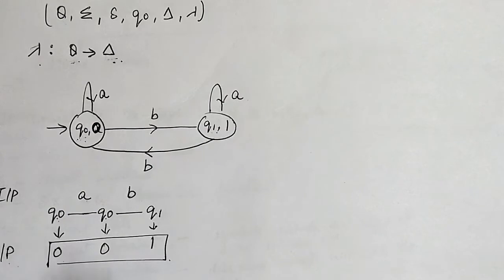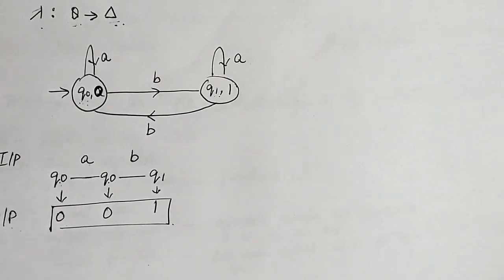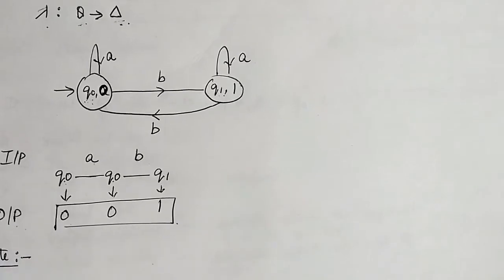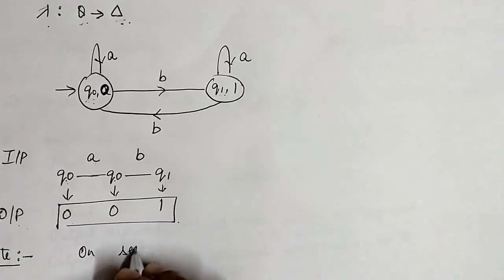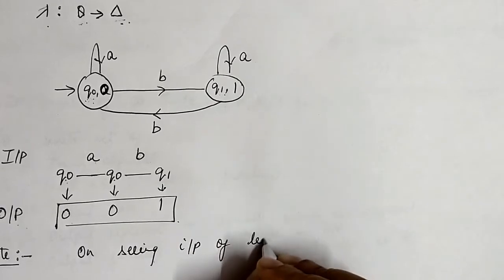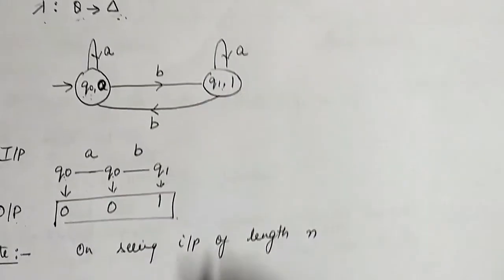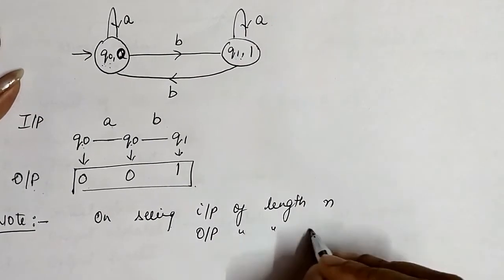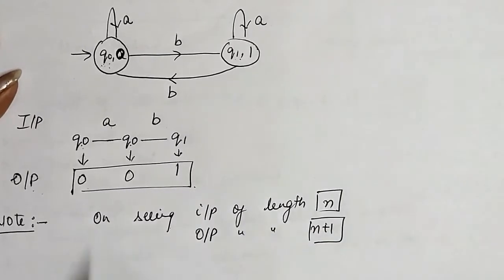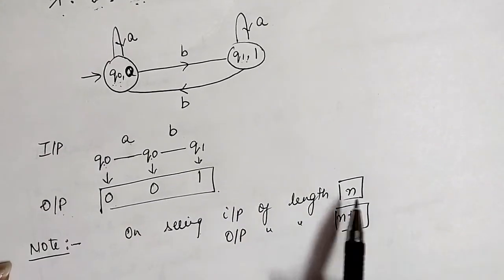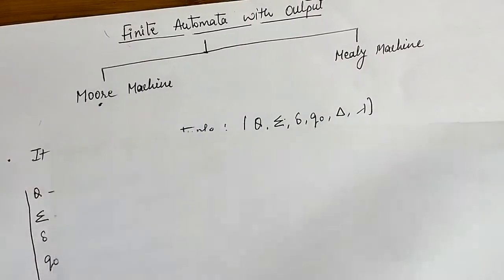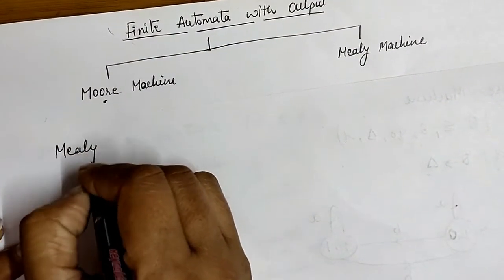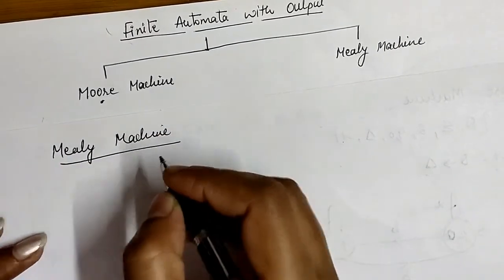So this is finite automata with output — as we are giving input, simultaneously we also produce the output. One important point in case of Moore machine: on seeing an input of length n, the output will be of length n plus 1. So on seeing input of length n in the Moore machine, the output will be of length n plus 1.